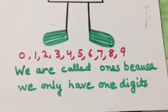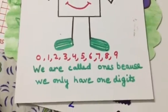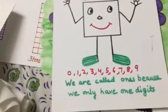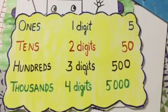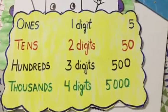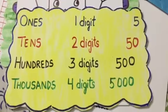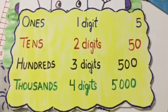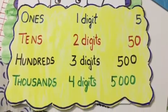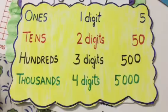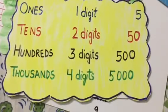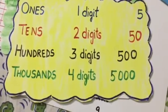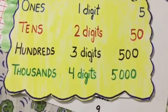We are called 1's because we only have 1 digit — 1's: 1 digit, like 5. 10's: 2 digits, like 50. 100's: 3 digits, for example 500. 1000's: 4 digits, like 5000.